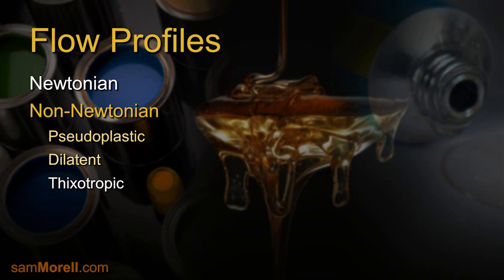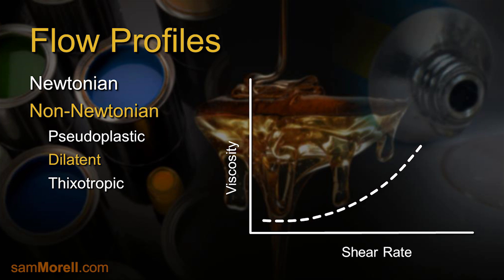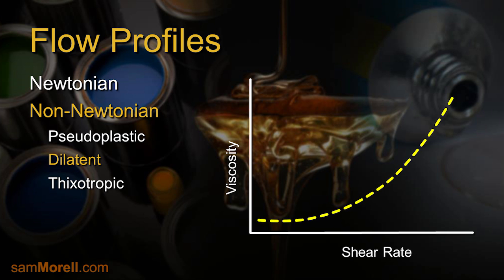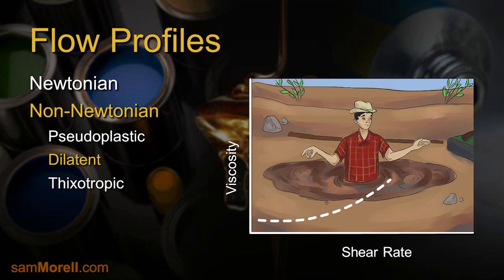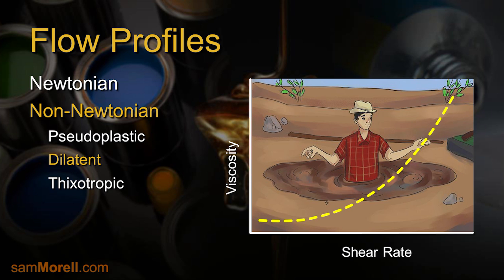Some non-Newtonian materials show the opposite profile — shear thickening — a viscosity rise with increasing shear rate, which also recovers along the same path when the shear rate is eliminated. This rheological phenomenon is known as dilatancy. While this profile may be somewhat counterintuitive, a good example would be quicksand. If you struggle to get out of quicksand, exerting high shear, the quicksand will instantly thicken up and restrain you. And if you stand still with just gravitational shear, you will slowly sink. The flow profile is called dilatant because the system increases in volume with increase in shear rate — they dilate, they expand.